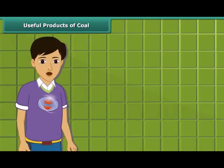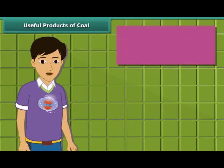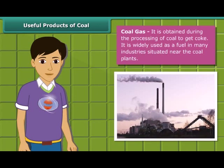To obtain coke from coal, coal gas is produced. In many industries located near coal plants, it is used as a fuel.